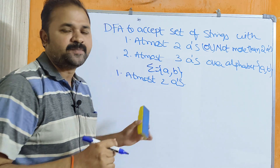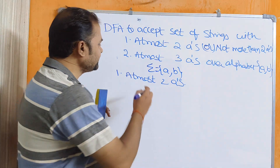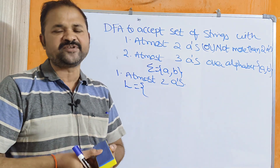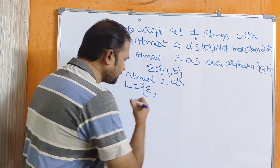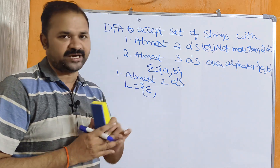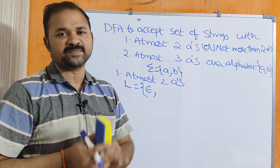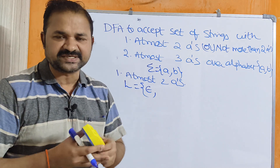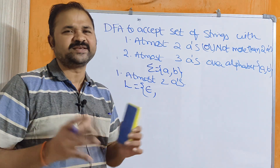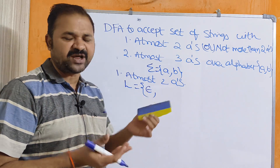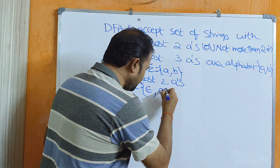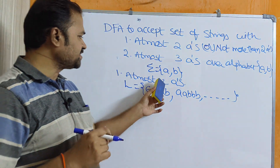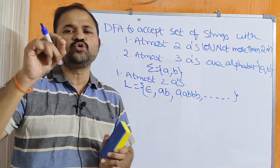At most 2 A's means the maximum number of A's is 2. So the language L can have 0 number of A's, which means epsilon; or at most 1 A or 2 A's. More than 2 A's is not possible. There is no constraint on the number of B's — we can use 0, 1, 2, or any number of B's. The constraint is: maximum 2 A's in the string.